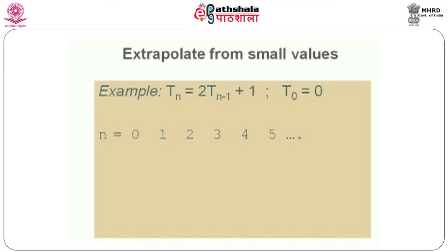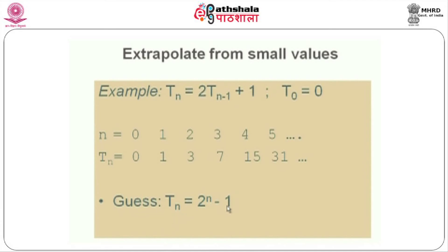Substituting for different values, we get T(n) as 0, 1, 3, 7, 15, 31. As we have seen already, the solution of this is going to be 2^n - 1. Therefore, we can come to the conclusion that this is the solution of this particular recurrence equation.